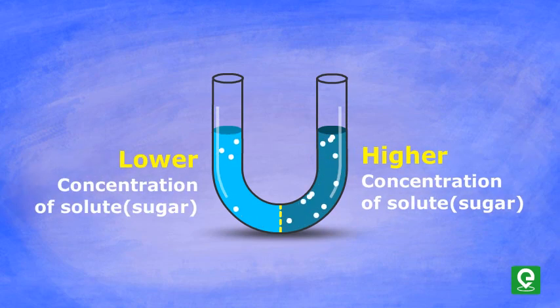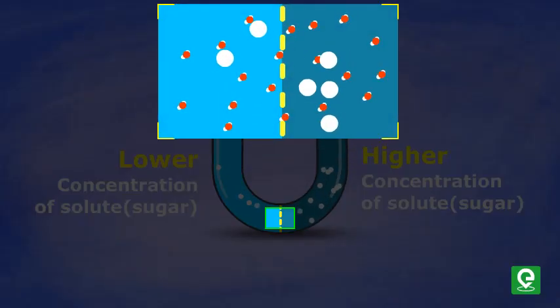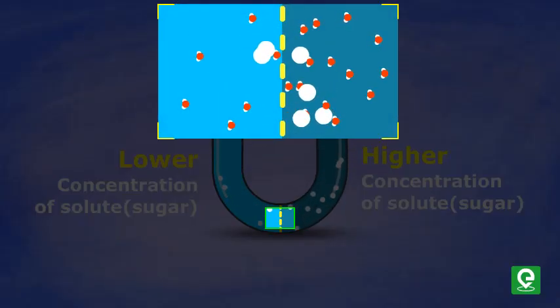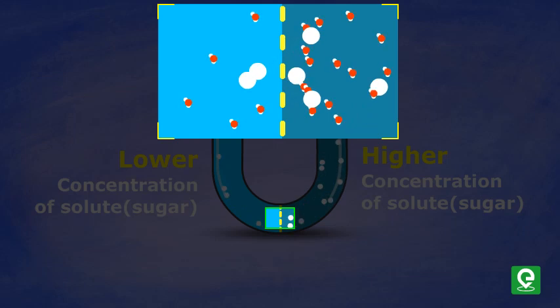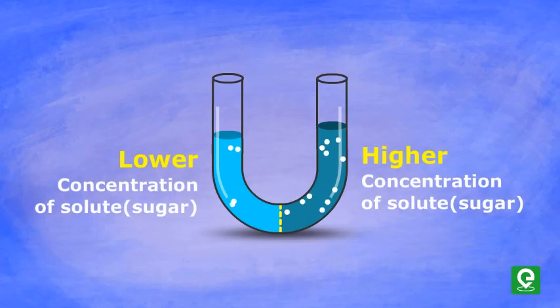Imagine osmosis taking place in an upright tube. The height of the solution will continue to increase due to a net flow of solvent until the added pressure of the height will cause the flow of solution to stop.